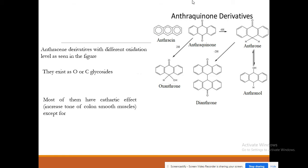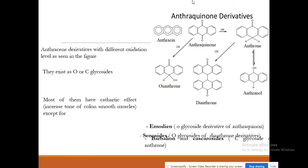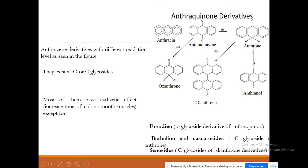These compounds can exist as O-glycosides or C-glycosides. An example of an O-glycoside of anthraquinone derivatives is emodin. Barbaloin is a C-glycoside of anthrone, while cascaroside is a C-glycoside of anthrone derivatives and sennoside is a glycoside of di-anthrone derivatives.